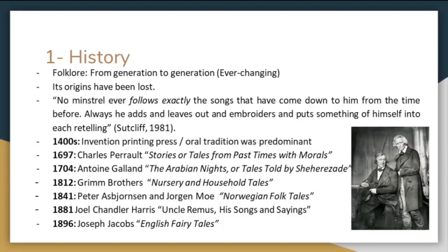Diving into a timeline, these are the most important traits that this folklore has. In the 1400s, the invention of the printing press was made, where oral tradition was still very predominant. Then in 1697, Charles Perrault created stories or tales from past times with morals. This was the first registration of The Sleeping Beauty, Little Red Riding Hood, and Cinderella, as some examples. Then in 1704, Antoine Galland recollected the Arabian Nights, which were stories from Asia and North Africa.